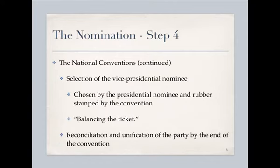Before the convention starts — sometimes long before, but usually within the week of the convention — the presidential candidate makes it known who they want as their vice presidential nominee. The nominee for vice president is chosen by the presidential nominee; it's a decision that's rubber-stamped by the convention and usually by the power brokers.